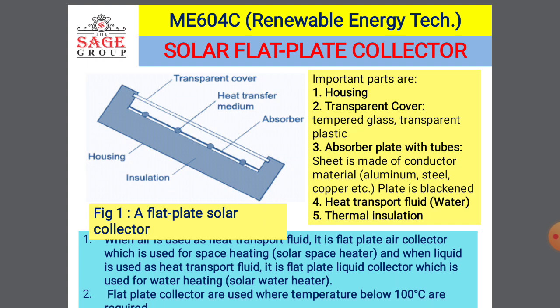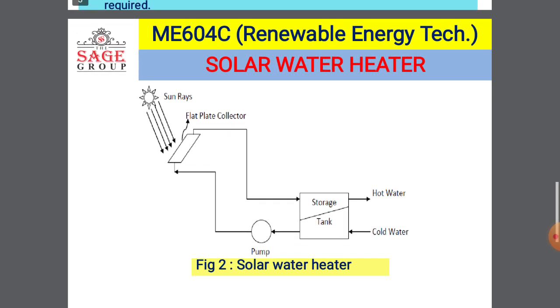When this solar flat plate collector is exposed to the sun for a long time, there are chances of overheating of the whole device and chances of heat leakage to the surroundings. So in order to reduce that, thermal insulation is also provided. According to the fluid being circulated through the tubes, these solar flat plate collectors can be a water or liquid flat plate collector, or an air flat plate collector. Flat plate collectors are generally used when a temperature below 100 degrees Celsius is to be obtained, meaning the temperature rise in the fluid circulated through the tubes is around 100 degrees centigrade.